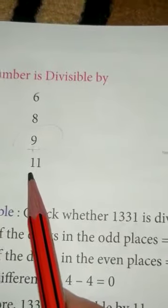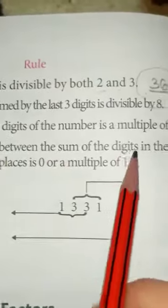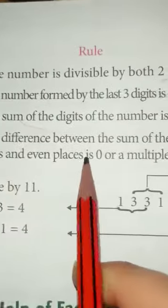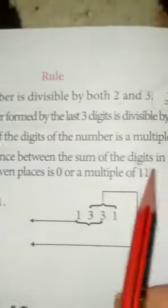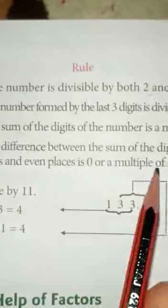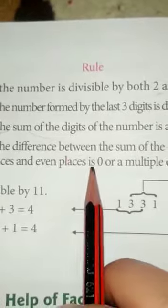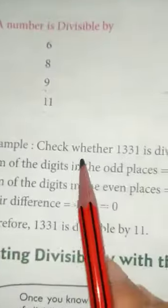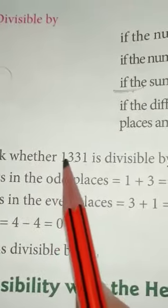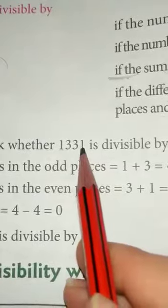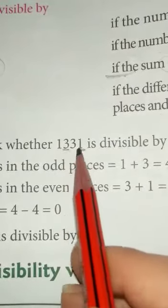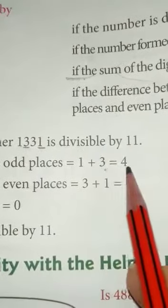Next is the divisibility rule for 11. If the difference between the sum of the digits in the odd places and the sum of the digits in the even places is 0 or a multiple of 11, then the number is divisible by 11. Let us understand this with the example 1331. The digits in the odd places are 1 and 3, so 1 + 3 = 4.